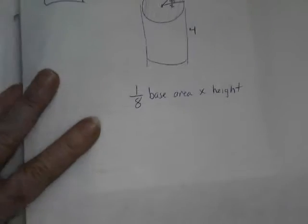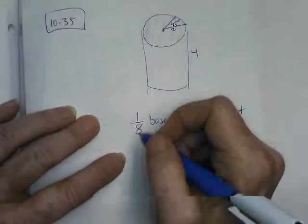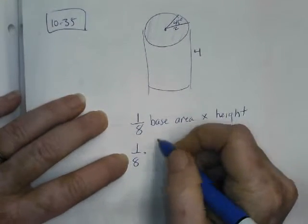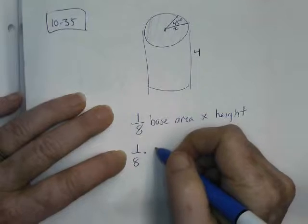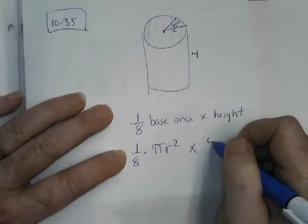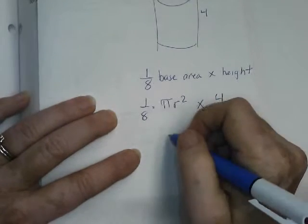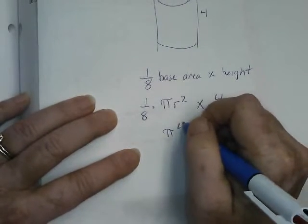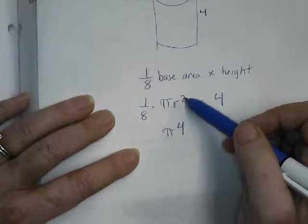Would you guys all agree that the base area is one eighth times πr²? Actually, times πr² times the height. We got four. The radius is two, so π... well, two times two is four.